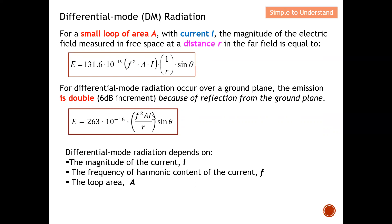The distance R is where the observation is made — typically we don't have much control over this, since EMC measurements are conducted at either 3 meters or 10 meters. However, we can have control over the frequency: if we reduce the frequency, we reduce the emission. Similarly, we can reduce the loop area and the current. In general, if we reduce all these values, the differential mode radiation will be reduced.